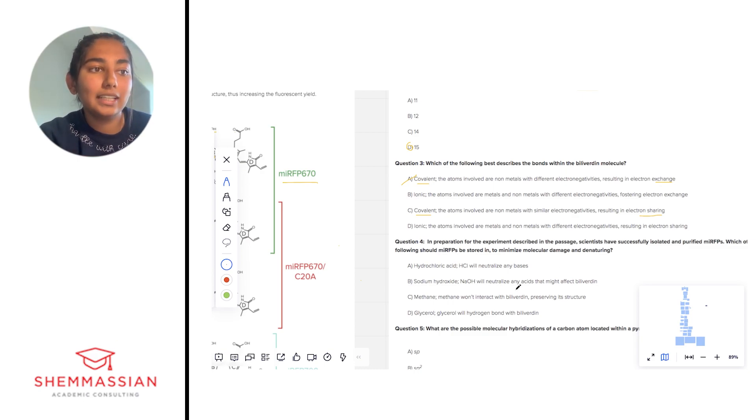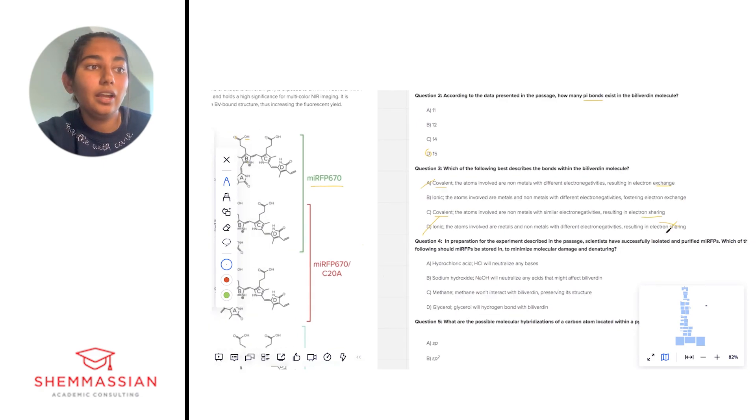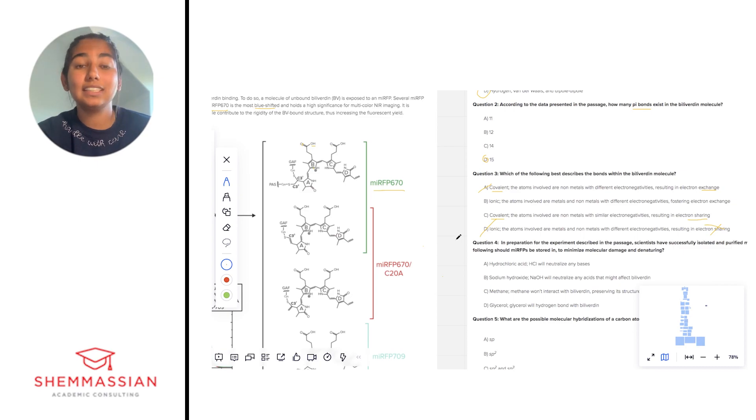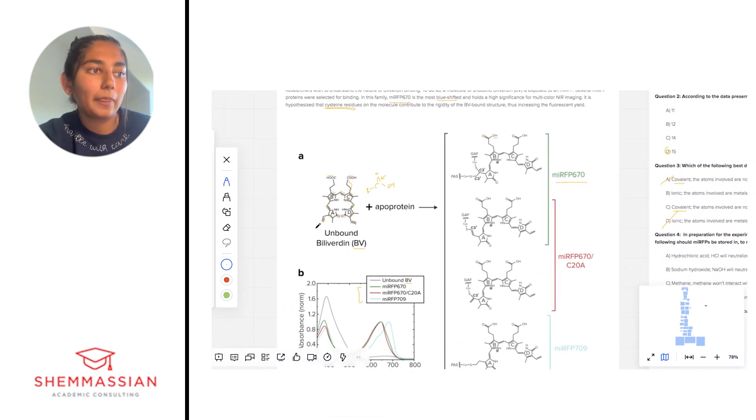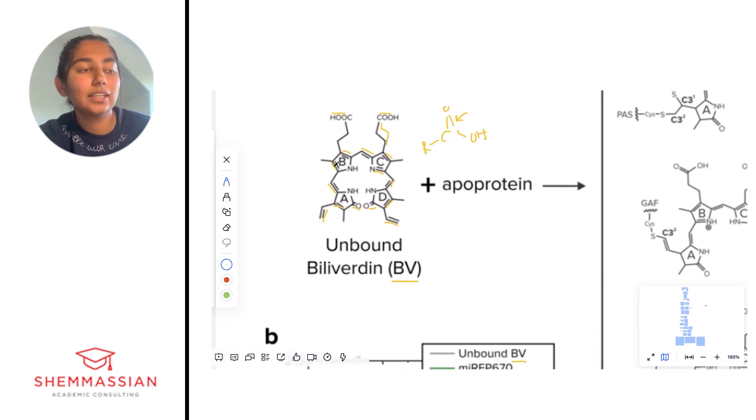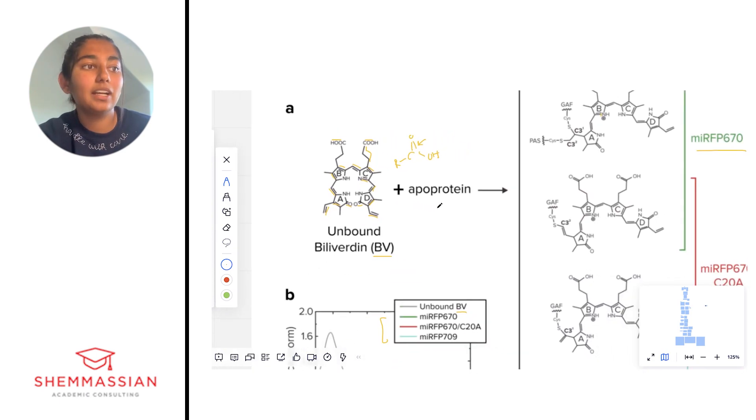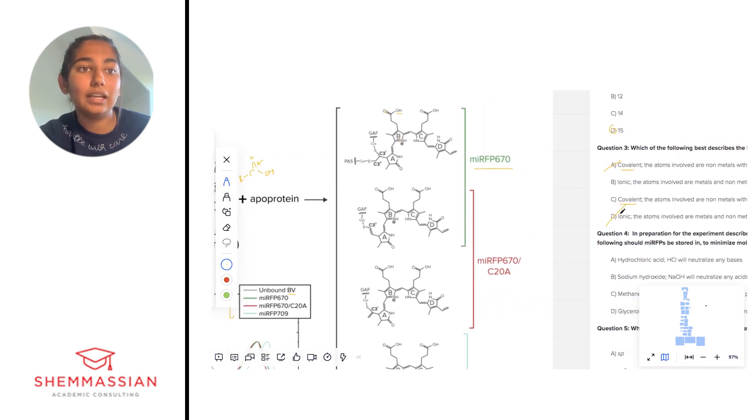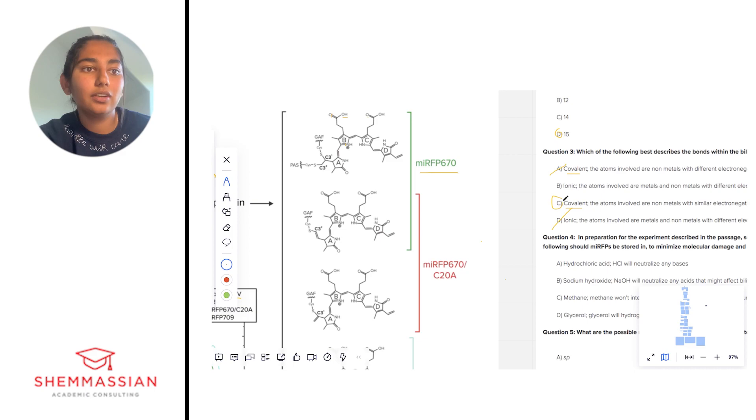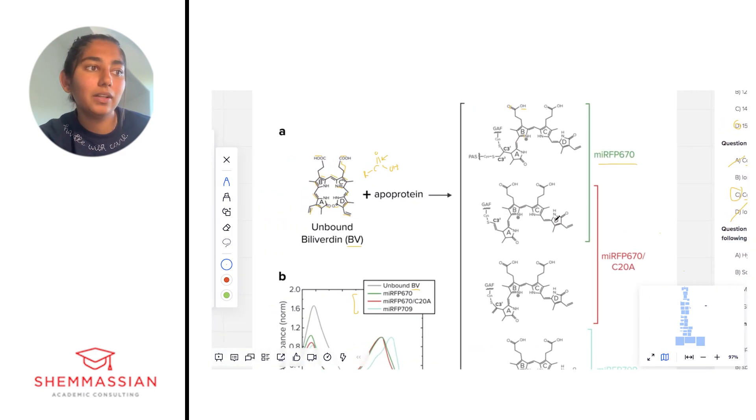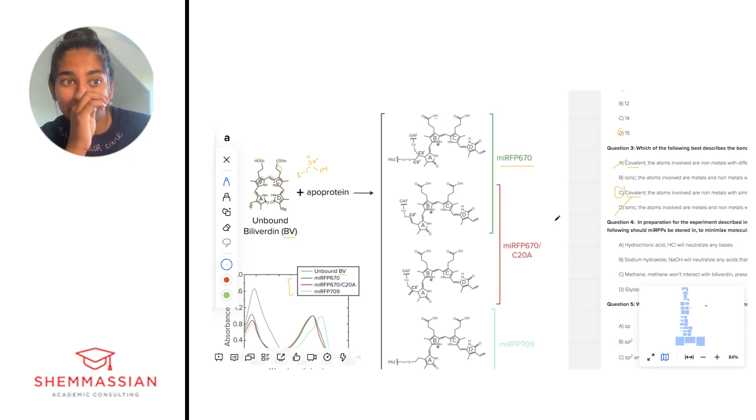Along that same vein of logic, we are going to eliminate answer choice D because ionic bonds do not have electron sharing—they have electron exchange. Now we're down to B and C, and basically we have to decide: are these bonds ionic or covalent? If we look in the molecule, we definitely see a lot of aromatic rings, carbons bonded to other carbons, lots of carbon chains, carbons bonded to nitrogens, carbons bonded to oxygens. We don't really see any metals involved, and because of that, I'm going to say that this is covalent bonding. Another key thing to note is that there's nothing really charged here in this BV molecule, and that's usually a hallmark of ionic bonding.